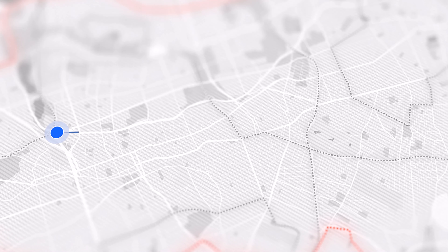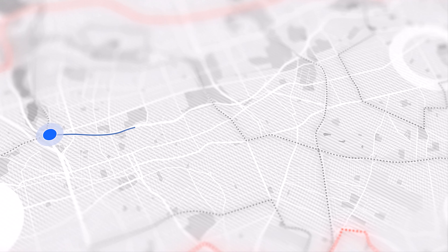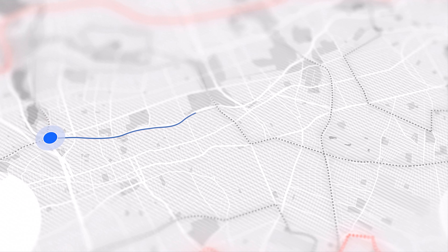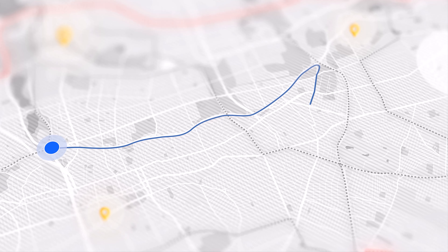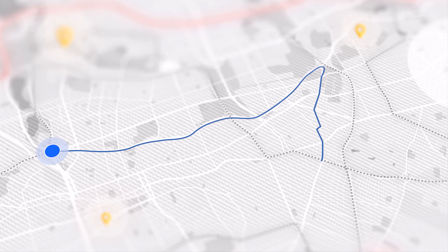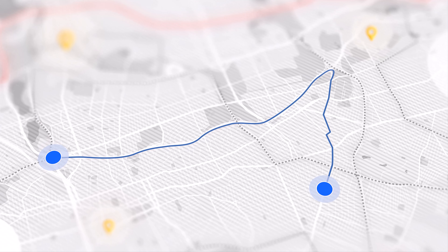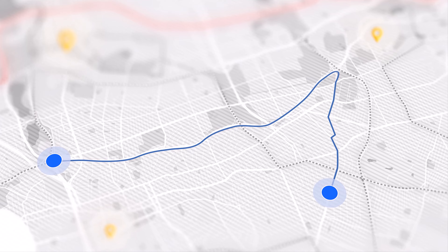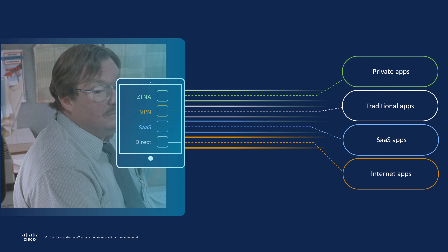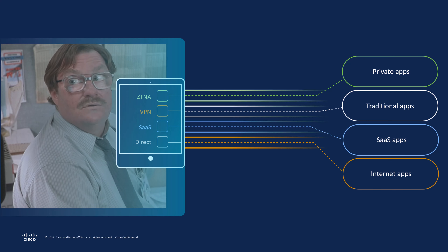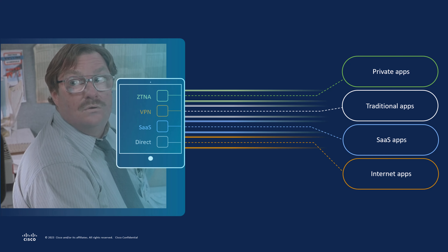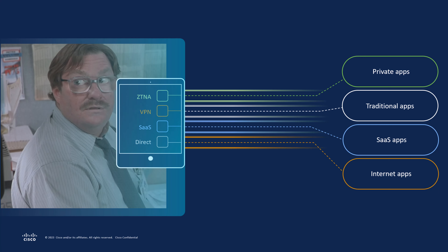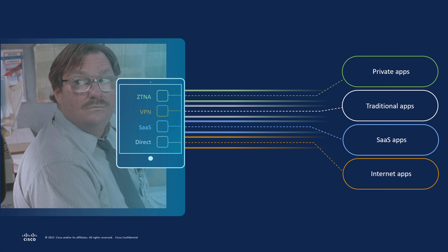Secure access is like a GPS. A driver doesn't care how he gets to a location and there are multiple paths to get to that particular location. Just like an end user doesn't care how he gets onto the network — it could be direct connect, some sort of SaaS application, VPN, or even something now called Zero Trust Network Access.